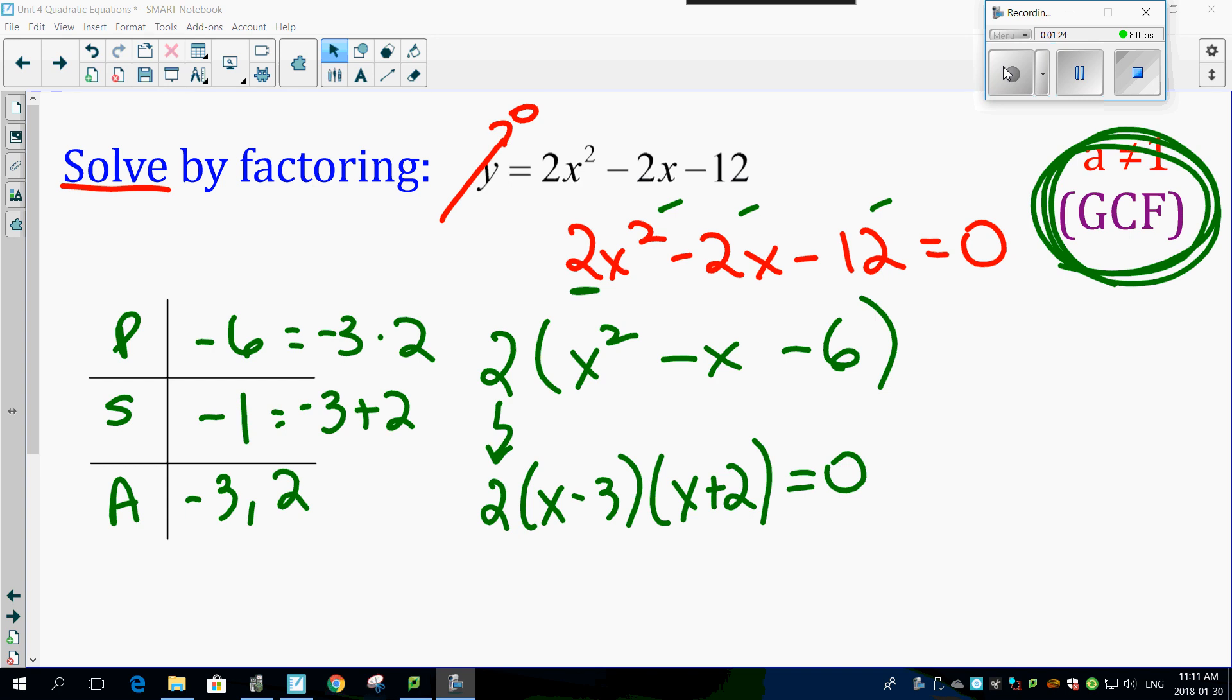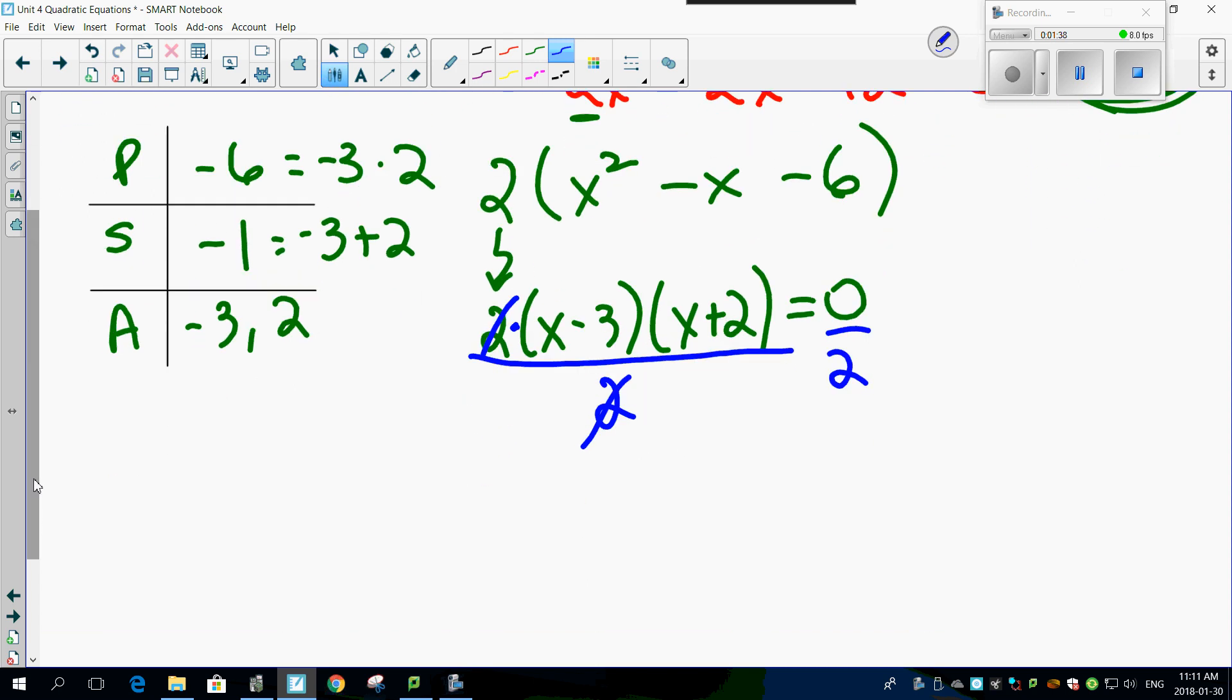Well, that becomes a bit of a dilemma here. What do we do about this 2? Well, remember, that 2 is multiplied here. So why don't we just divide out a 2 from both sides and let's get rid of it. Check out what happens. This is the best part of this being equal to 0. The 2s cancel out, leaving you x minus 3 and x plus 2. But what is 0 divided by 2? It's 0.